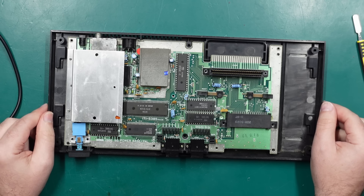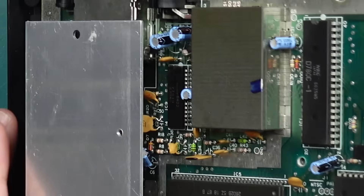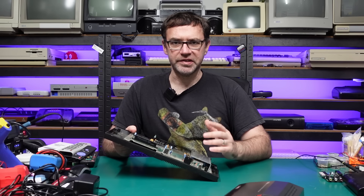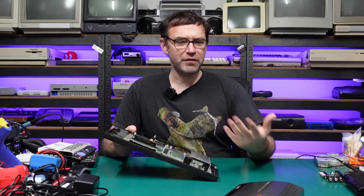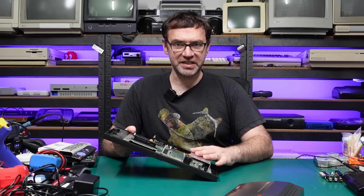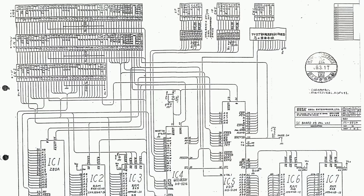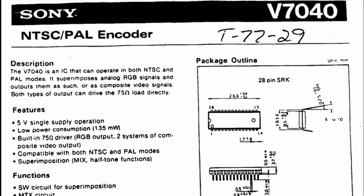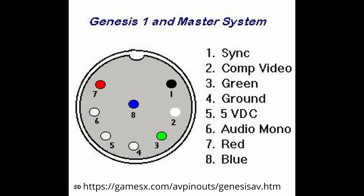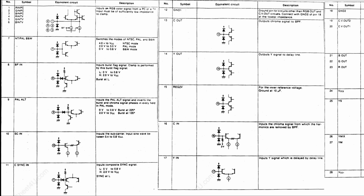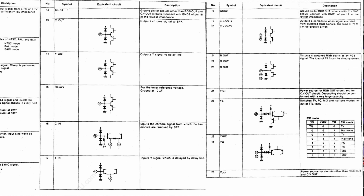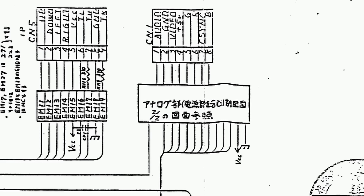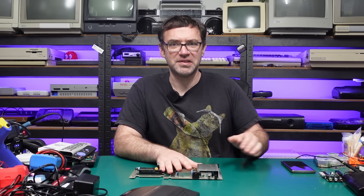There are a couple of different versions of the Master System 1. This is one of the older revisions and it uses a Sony V7040 video amplifier chip. The later ones use a Sony CXA something. So the particular mods I'm going to show may only work on the older models. Thanks to the internet we have schematics for the Master System 1, although they're not very legible. We also have the datasheet for the V7040 video encoder, and we know pin 1 on the DIN connector is our composite sync line. Looking at the datasheet, I can see pin 11 is C-sync in, but there's no C-sync out, so let's try to trace this out ourselves.